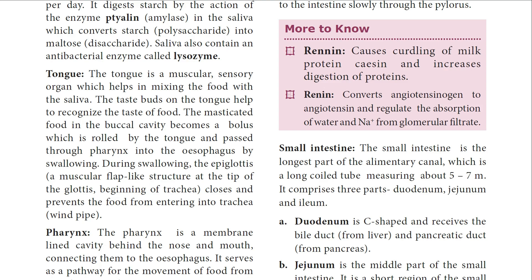The tongue is a muscular sensory organ meant for tasting food because it has taste buds that recognize all types of taste. It helps masticate the food in the buccal cavity, by which it becomes a bolus. The tongue rolls the food and mixes it with saliva and mucus, making it softer so it can pass through the pharynx and esophagus easily. During swallowing, the epiglottis — a muscular flap-like structure at the tip of the glottis — closes the trachea and prevents food from entering the windpipe.